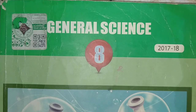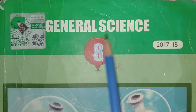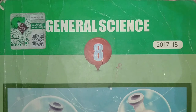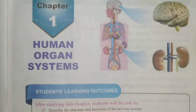Bismillah ar-Rahman ar-Rahim. Assalamu alaikum wa rahmatullahi wa barakatuhu. Dear students, hope you all will be fine. Today we are going to start General Science Grade 8th Punjab Curriculum. All of you open your reading textbook page number 1. Chapter number 1, Human Organ System.